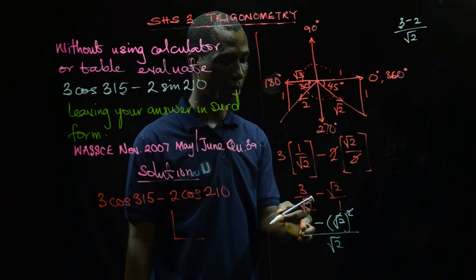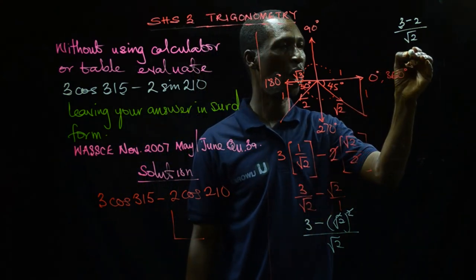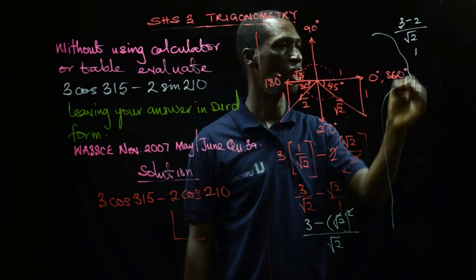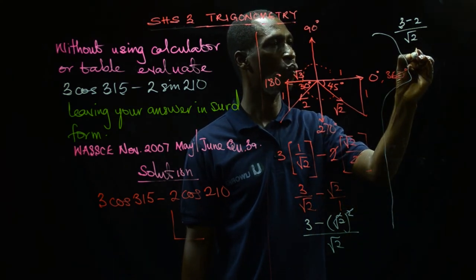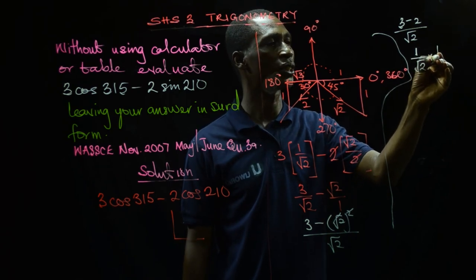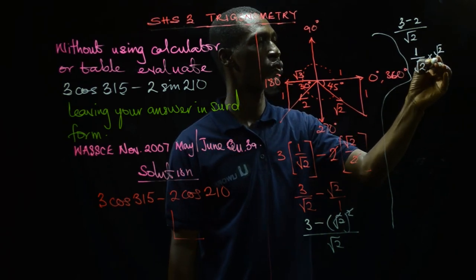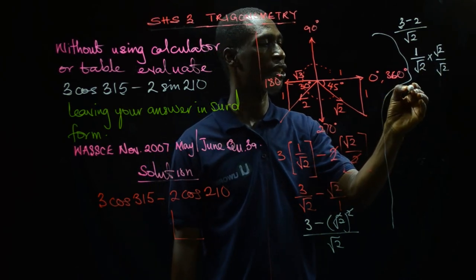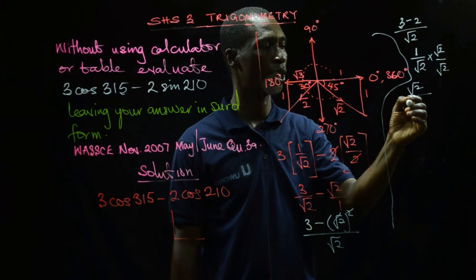So we have 2 and 3, 2 from 3 will give me 1 over √2. We multiply through the top and down by √2 for rationalization. Finally we're going to get √2 over √2 squared.